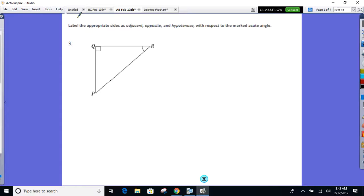Where's the hypotenuse? RP. Yep, there's the hypotenuse. What do you label as the opposite side? QP. And what do we label as the adjacent leg? QR. How do you feel about that?